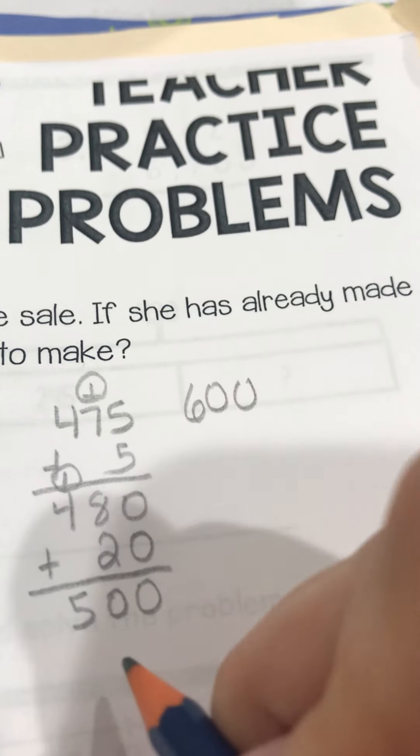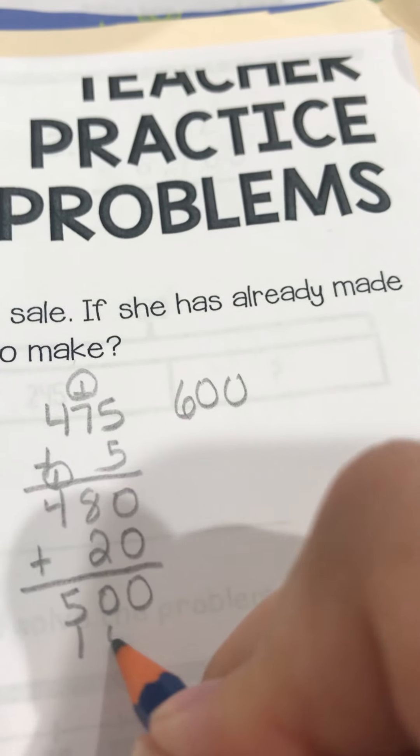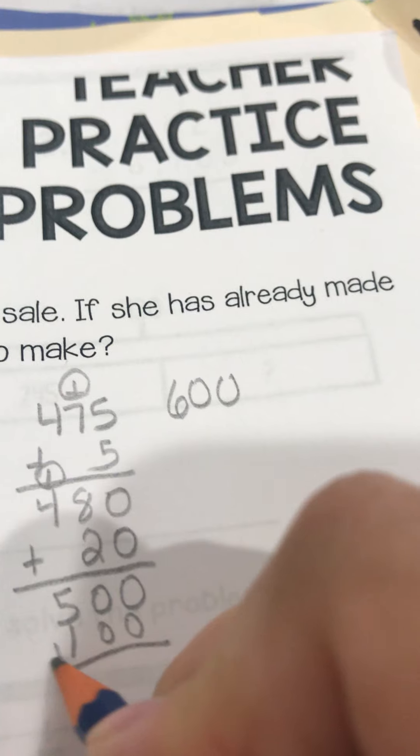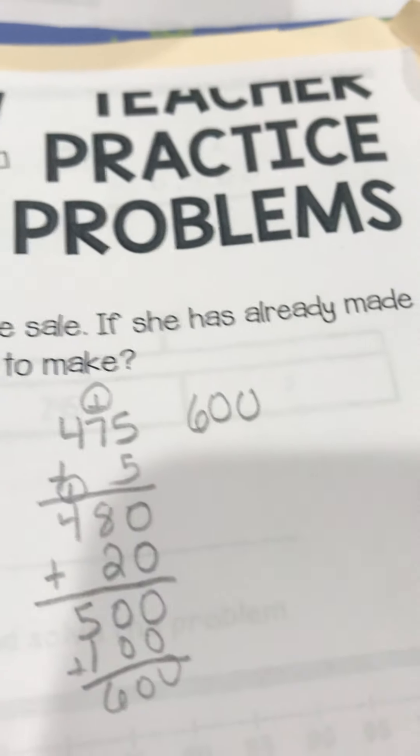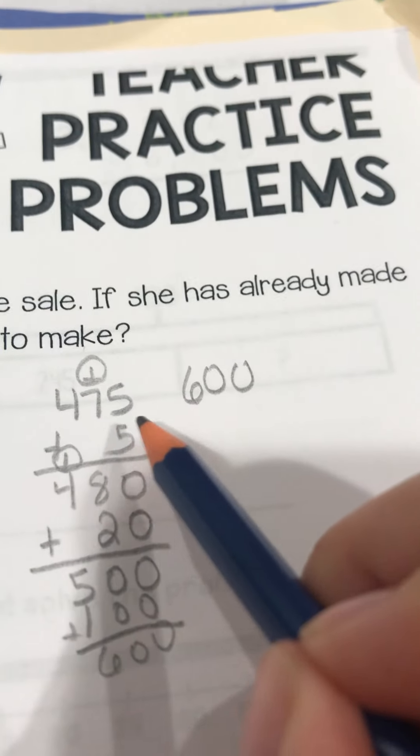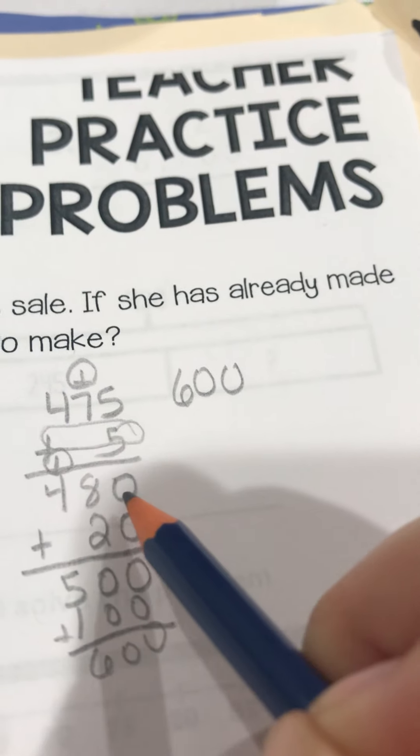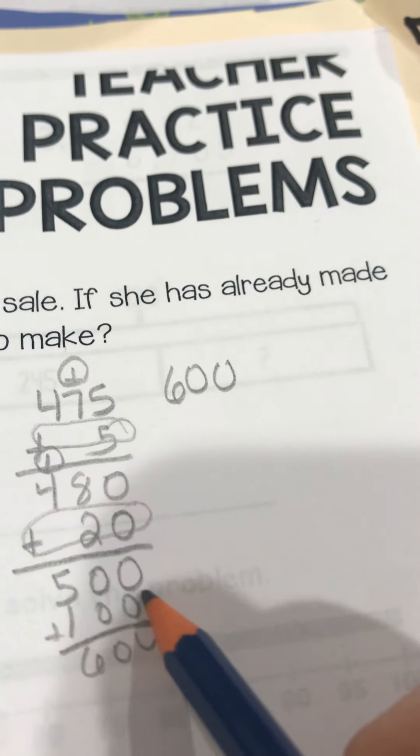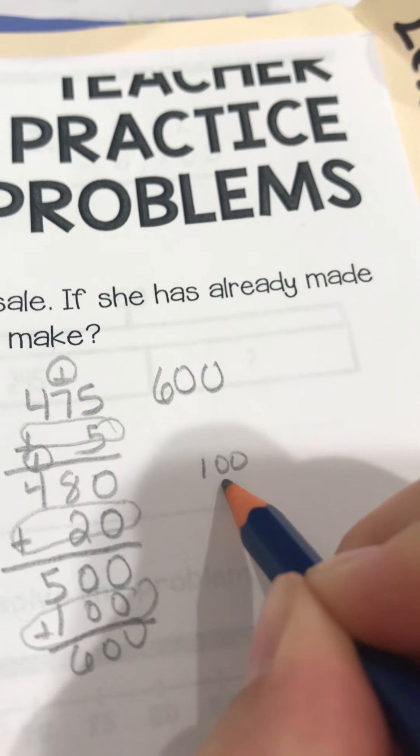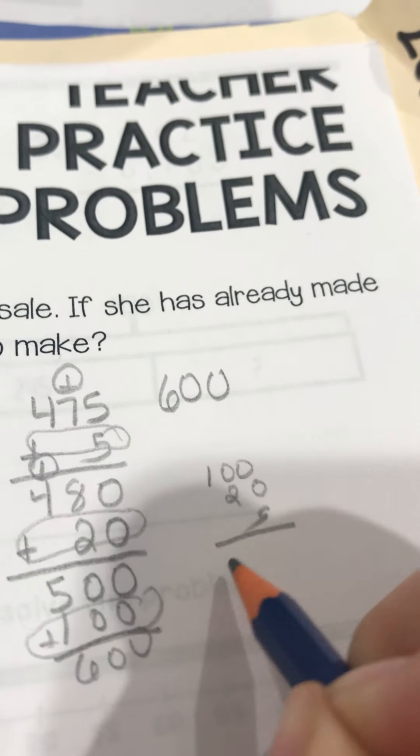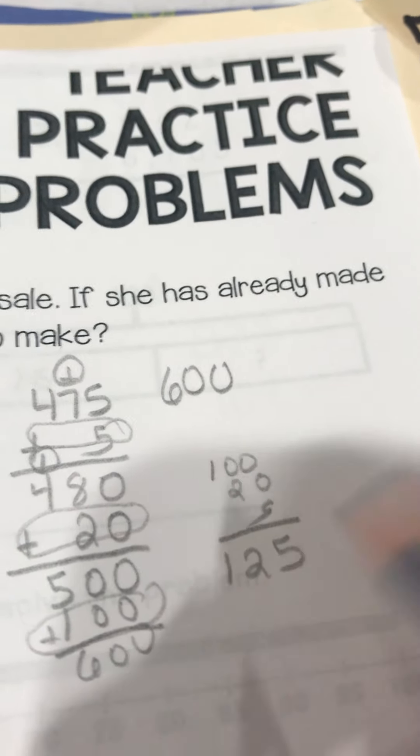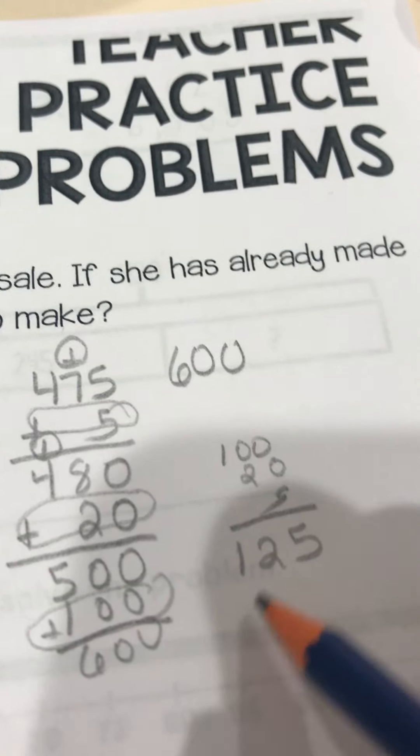Now, I want to turn my tens place into ten. So, if I add two to eight, and since it's in the tens place, that's twenty. And now, I'm at five hundred. Super close. I want my five hundred now to be a six hundred. So, I just need to add one hundred more. And voila, I've turned it into six hundred. Circle what I added. I added five. I added twenty. And I added one hundred. One hundred twenty-five.